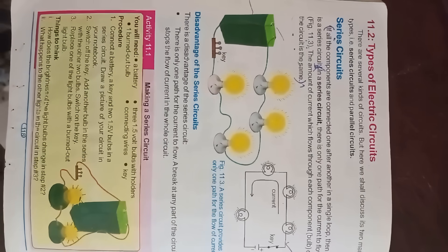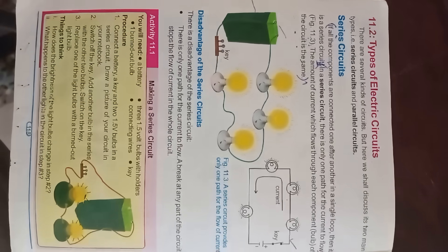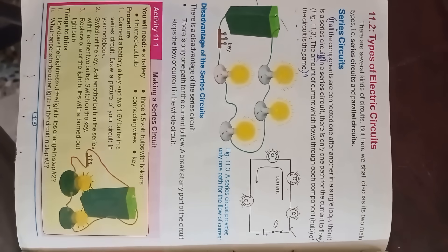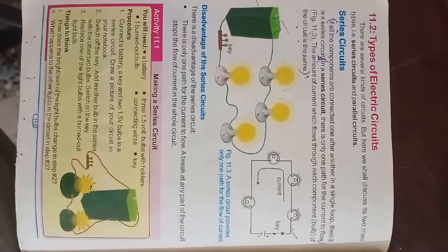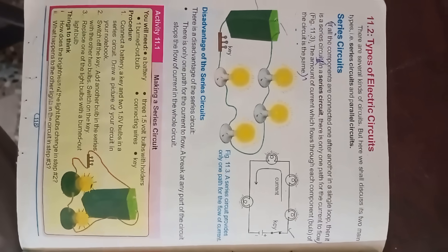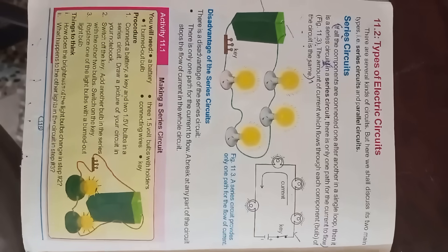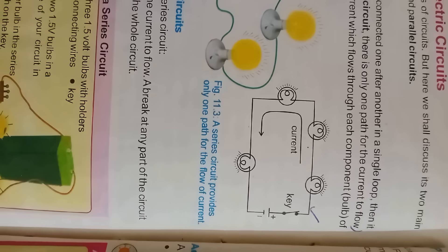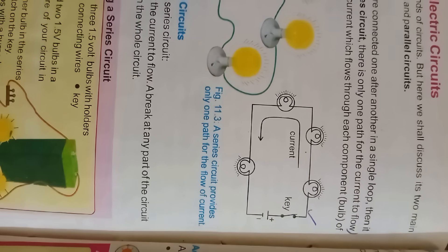Series circuits: if all the components are connected one after another in a single loop, then it is a series circuit. In a series circuit, there is only one path for the current to flow. The amount of current which flows through each component of the circuit is the same, as shown in the diagram of a series circuit.